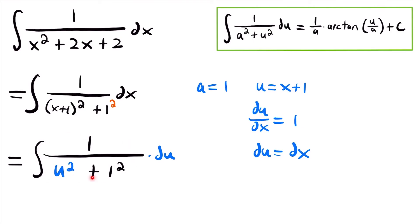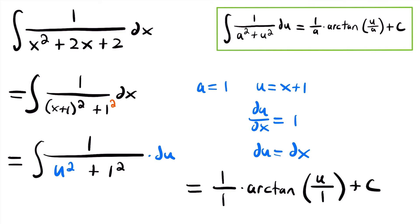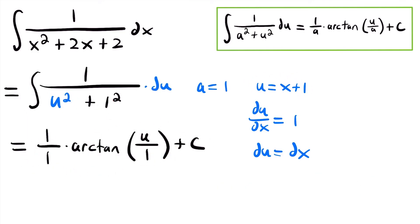We replaced x + 1 with u, and replaced dx with du. Now we can see how this matches the integration rule: we have 1 divided by u² + 1², where 1 is a constant. Applying the rule, this integral equals 1 divided by a — so 1 divided by 1 — times arctan(u/a), which is arctan(u/1). Replacing u with x + 1, and simplifying, this gives arctan(x + 1) + C.